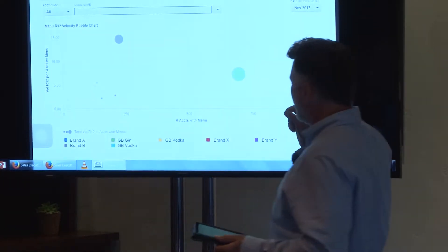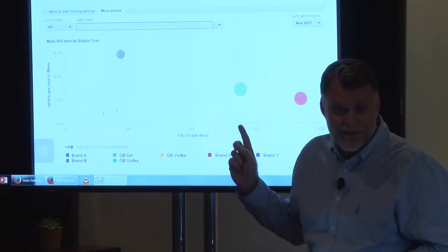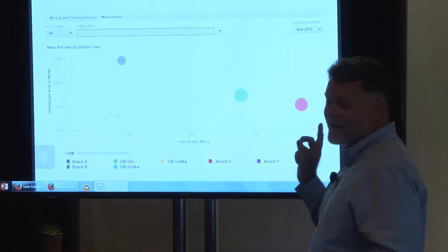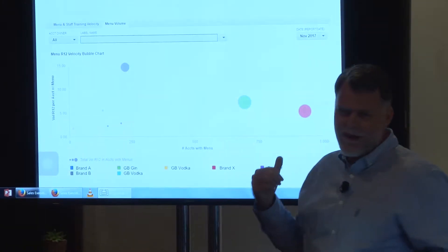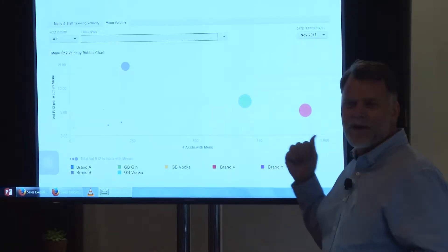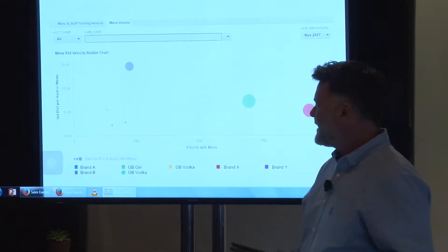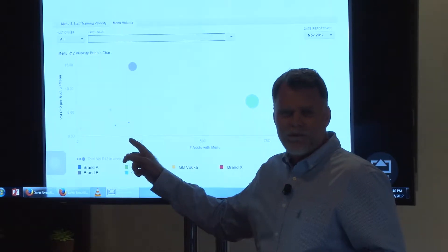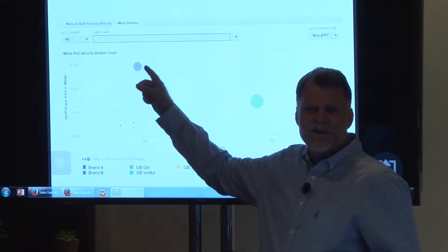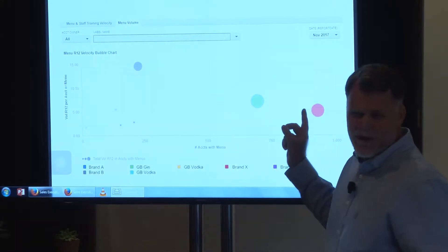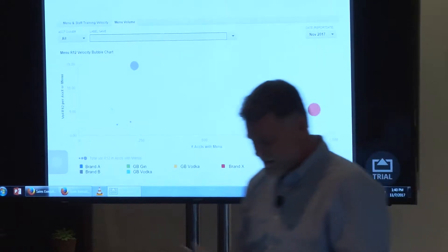So I can see things like: I don't have a lot of menus on this brand, but every one of them does 15 cases per month when they have a menu — that's a lot of volume per menu. Meanwhile, I've got this brand over here where we've worked our tails off to get menus, and I'm only getting five cases a month in volume out of this brand's menus. As an executive I might say: let's find out what recipe this is, make sure everybody's using it, or change the recipes we're promoting with this brand.